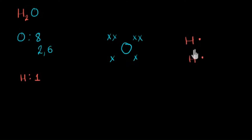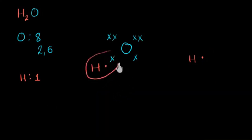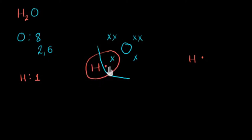Now let's come to hydrogen. Hydrogen needs only two electrons to become stable, just like the noble gas helium — it needs a complete duplet. It currently has one electron, so it needs one more. To gain one electron, it needs to share one electron with oxygen. So let's make hydrogen and oxygen share one electron each with each other. Drawing a circle to denote sharing: hydrogen and oxygen are sharing one electron each. If you focus on hydrogen, its duplet is now complete — these two shared electrons go around both atoms, so both experience them.